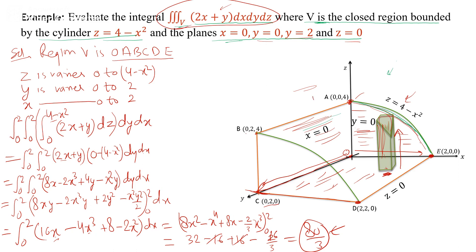In this way you can evaluate the triple integral over a particular region. Whenever you perform triple integration, take care of the order of integration. If the limit of z is in the form of x and y, first integrate with respect to z, then check the limit of y, then the limit of x, and integrate in that order accordingly.